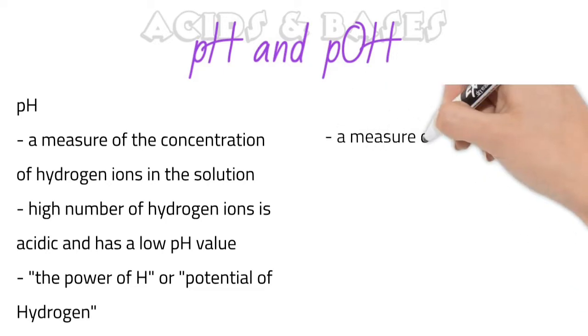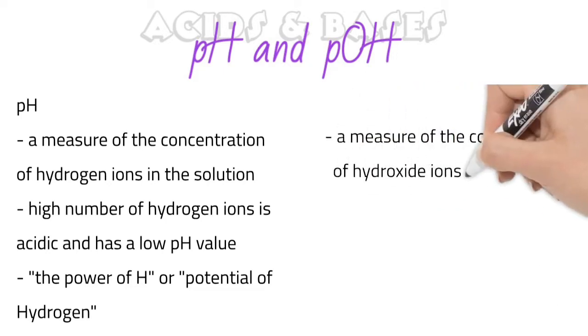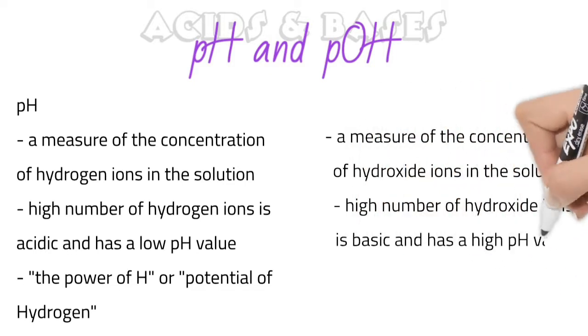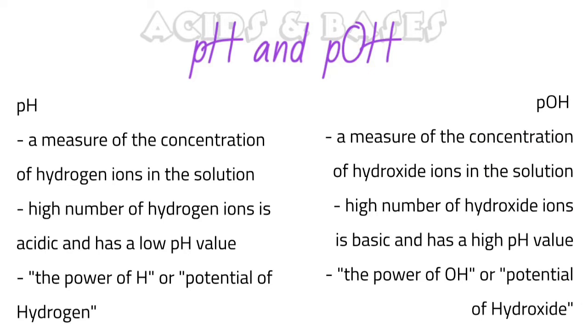A solution with a high number of hydroxide ions, so that's our OH minus ions, is said to be basic and has a very high pH value. So something that is over 7, where 7 is neutral.